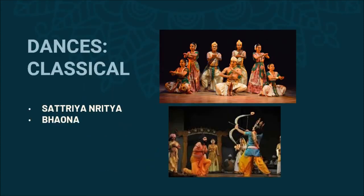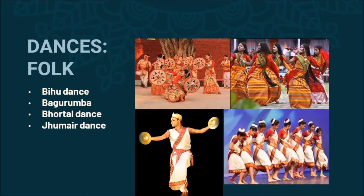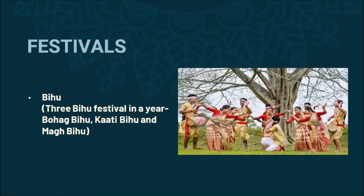Sattriya is an important classical dance form of Assam. Bihu dance, Bagurumba dance, Bhortal dance, and Jhumur dance are important folk dances. Bihu is the most important festival of Assam and it is celebrated three times a year with different names: Bohag Bihu, Kati Bihu, and Magh Bihu.